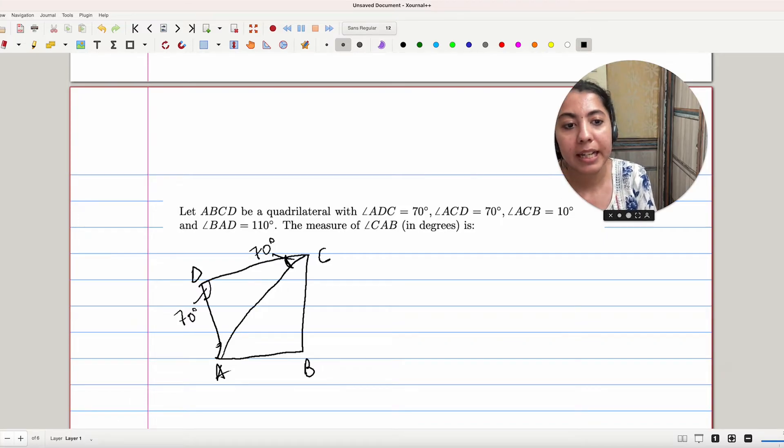Next, we have angle ACB, ACB as 10 degrees, and angle BAD. The whole angle is 110 degrees. We have to find the measure of angle CAB. This angle.